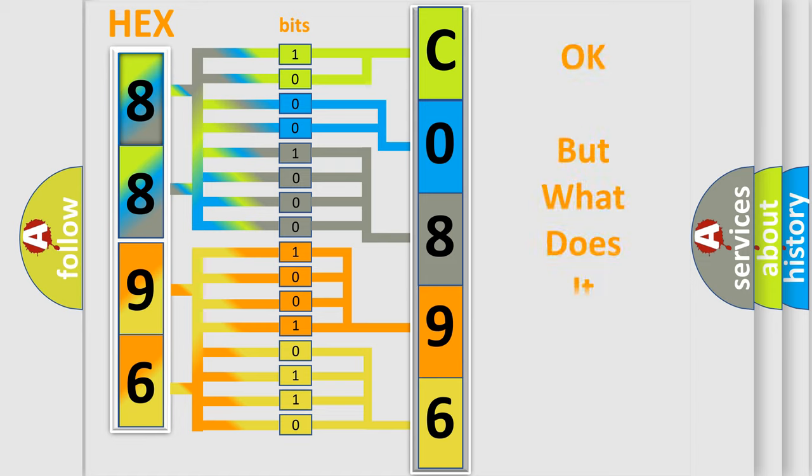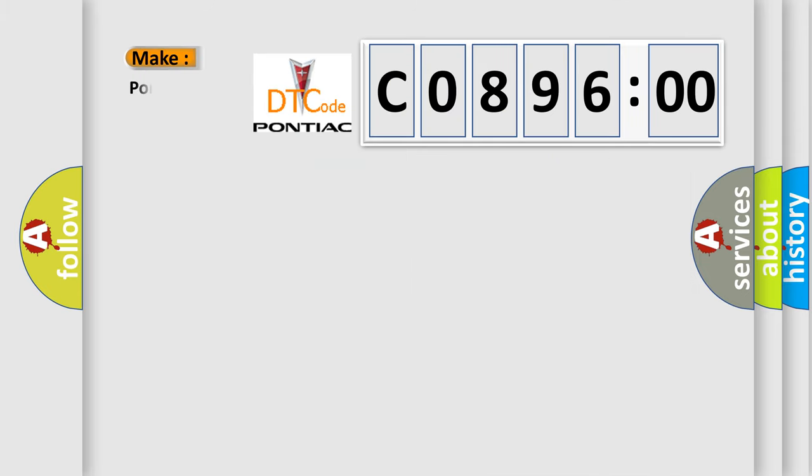The number itself does not make sense to us if we cannot assign information about it to what it actually expresses. So, what does the diagnostic trouble code C089600 interpret specifically for Pontiac car manufacturers?